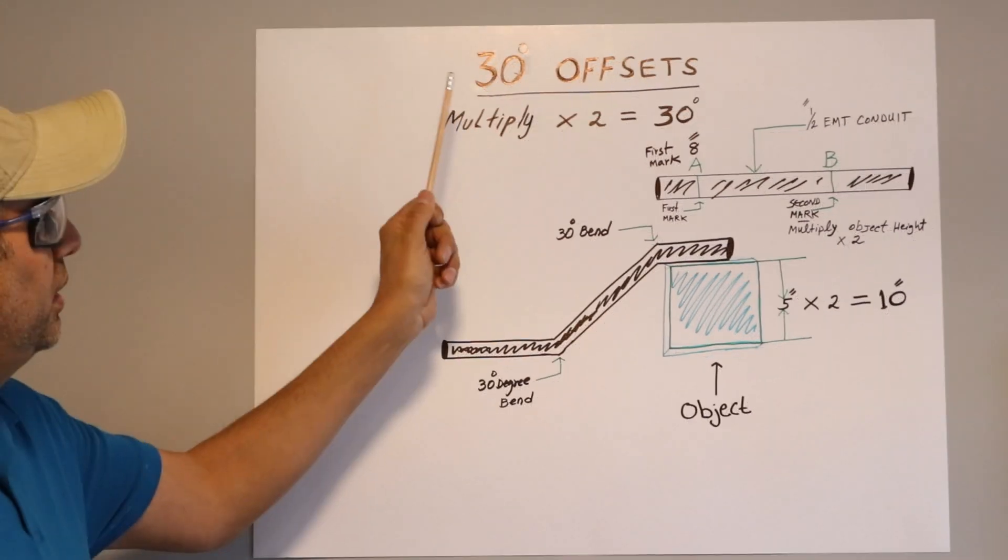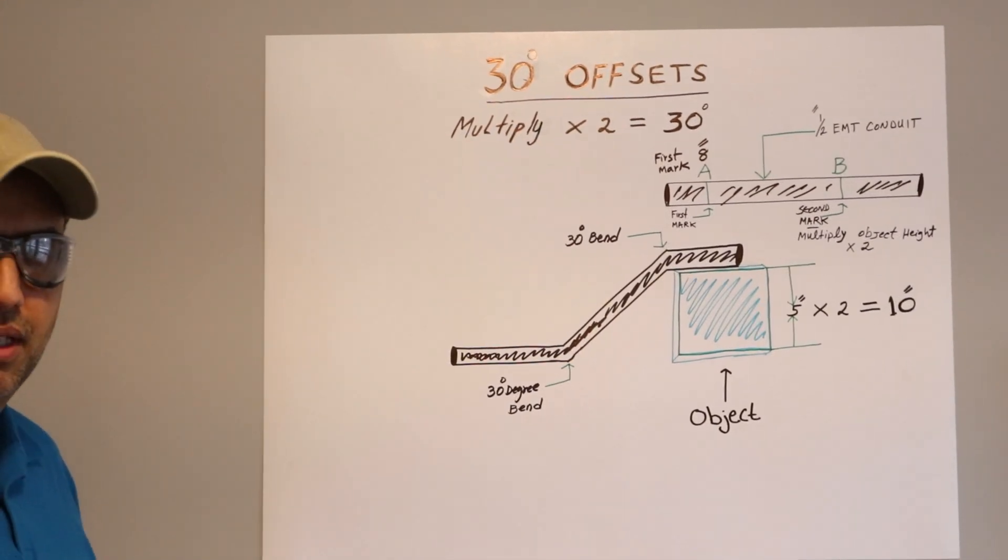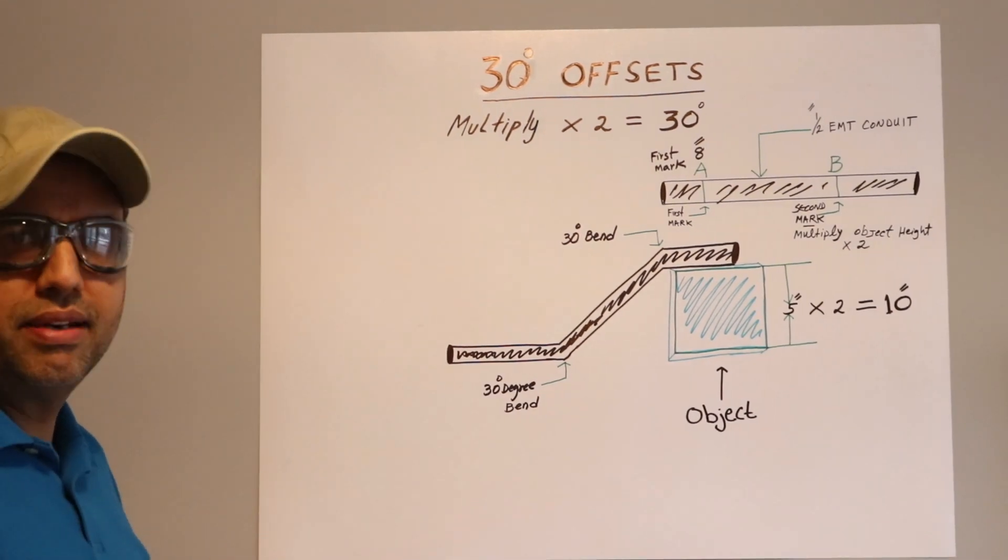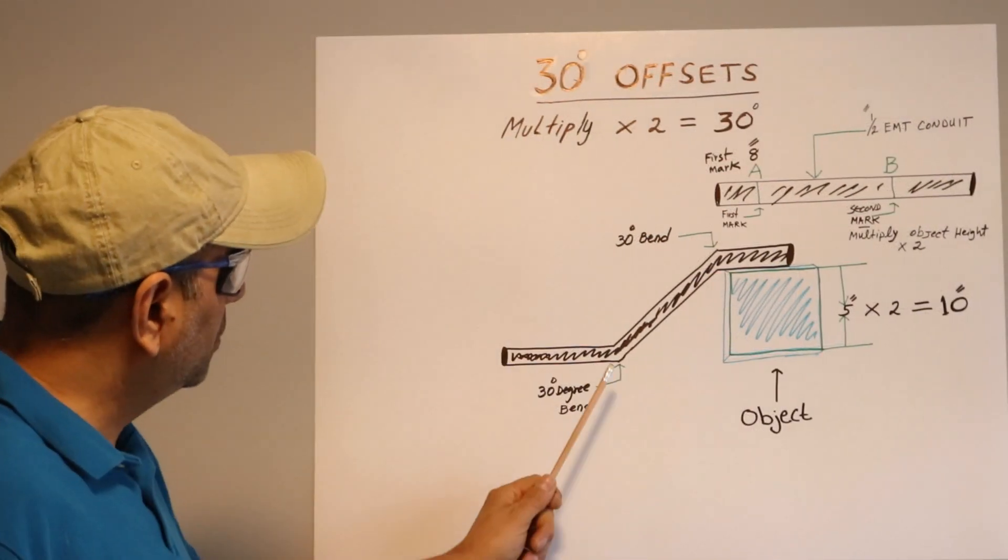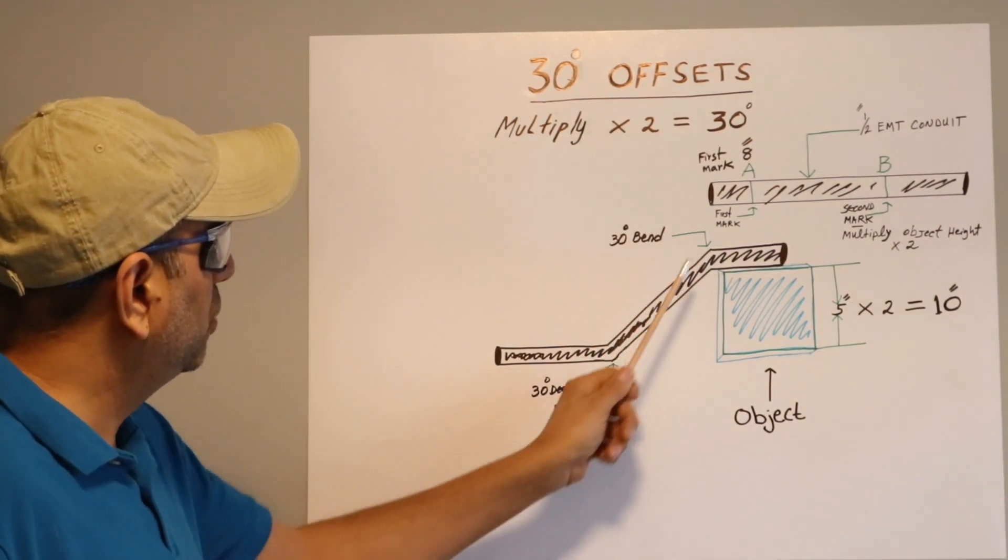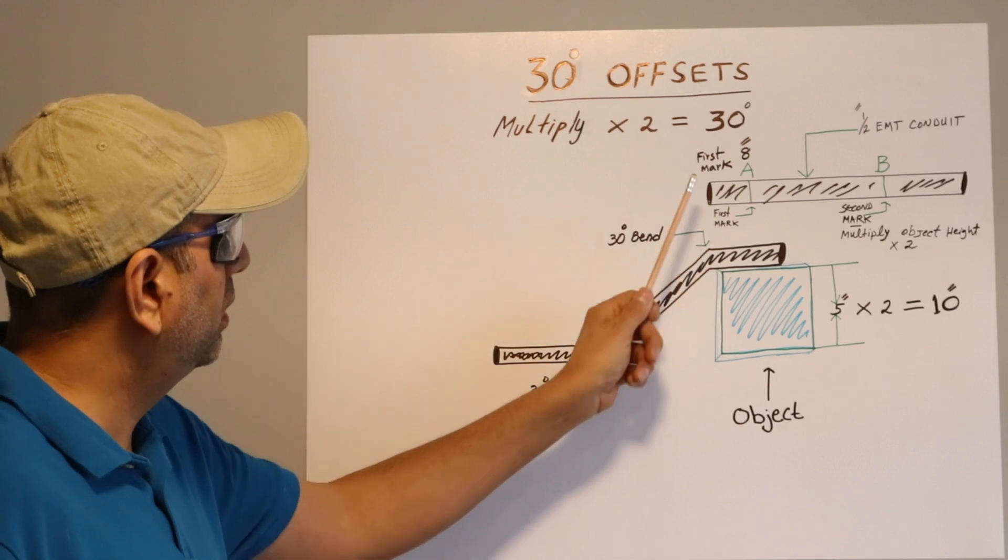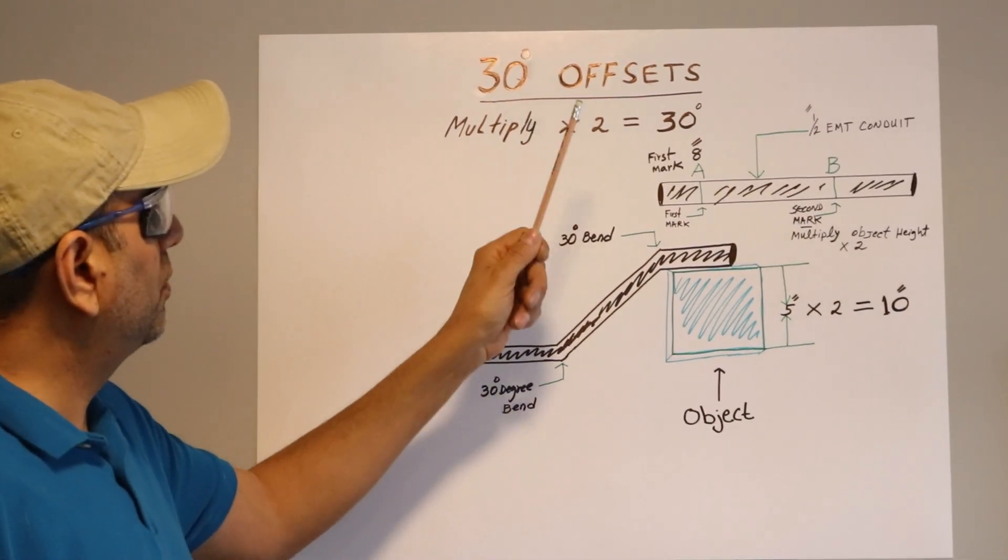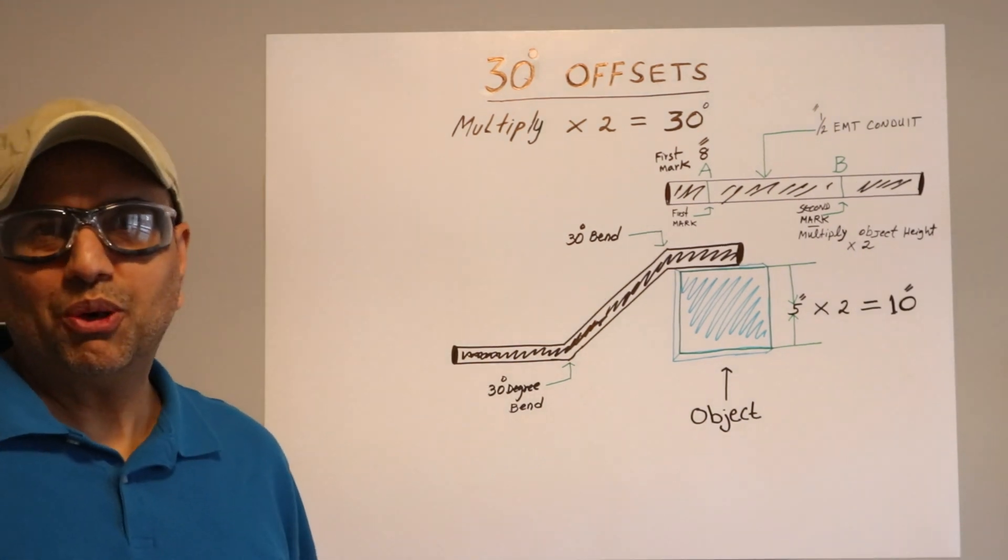All about a 30-degree offset bend. So a 30-degree offset bend is a little bit different than a 90-degree bend. In this case, we're gonna bend a 30-degree. So 30-degree, two bends we're gonna do—one here, one there on this conduit. 30-degree offset bend is very easy to do.